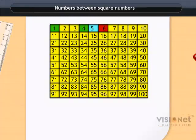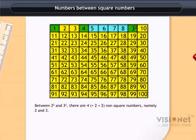Proceeding to the next square number, that is 9, we find there are 4 non-square numbers. Or we can say there are 2 × 2 non-square numbers between the two square numbers 4 and 9.